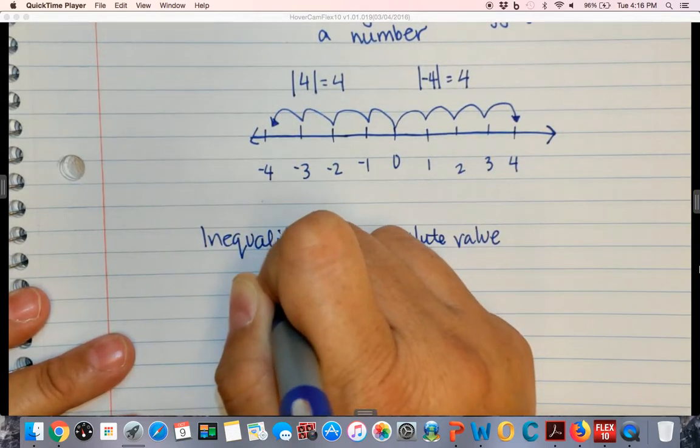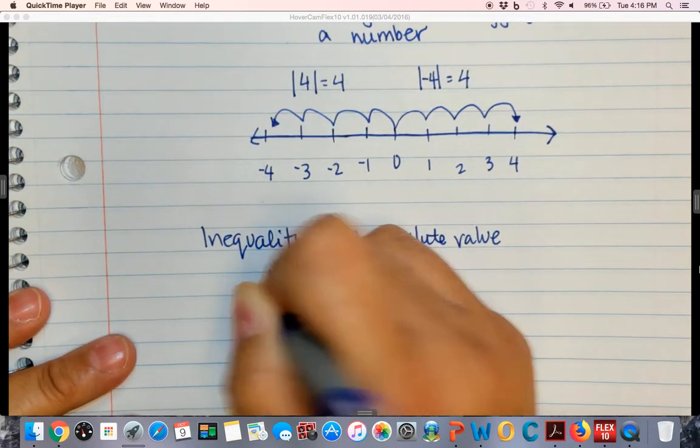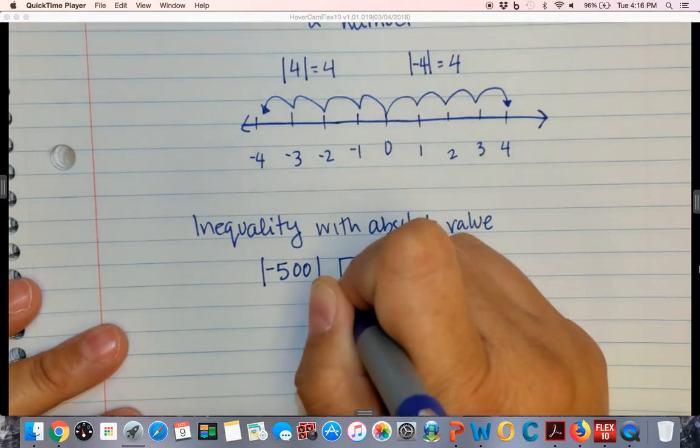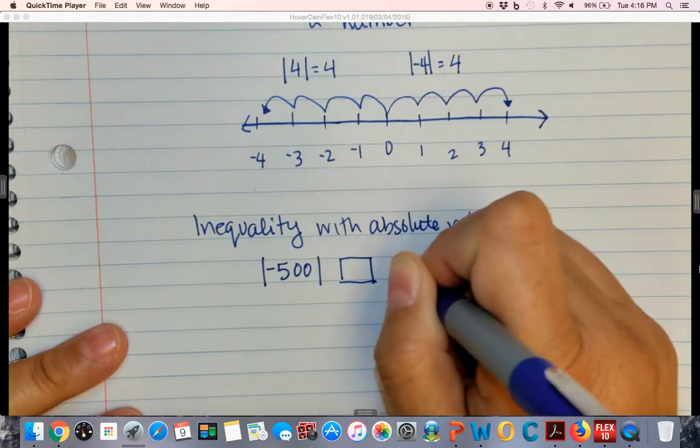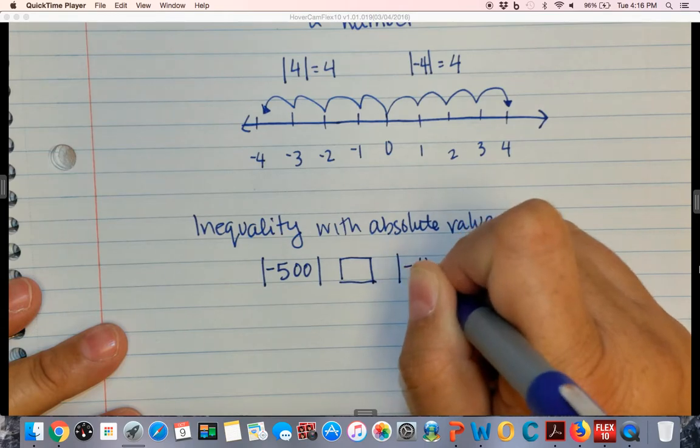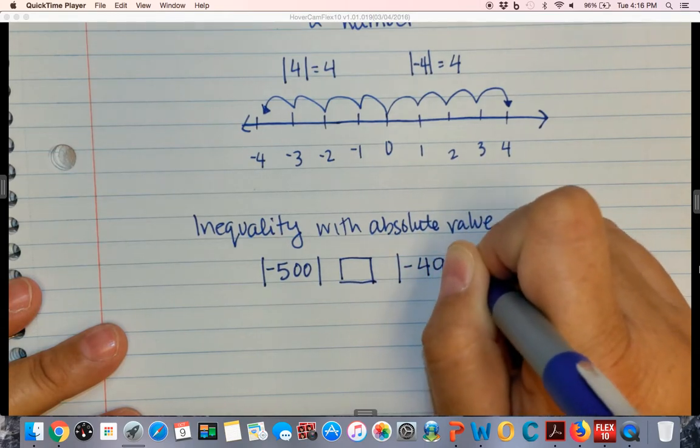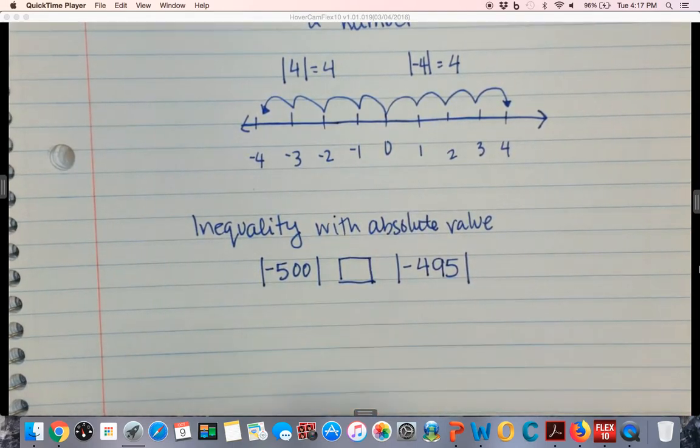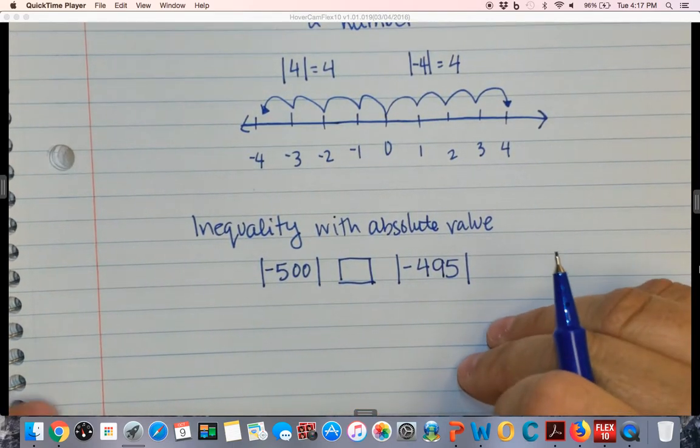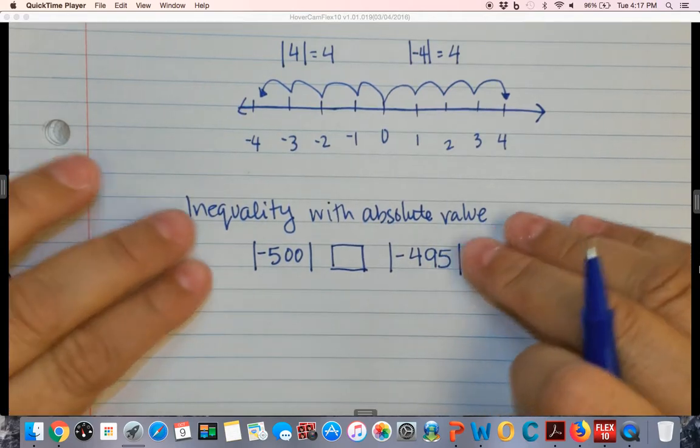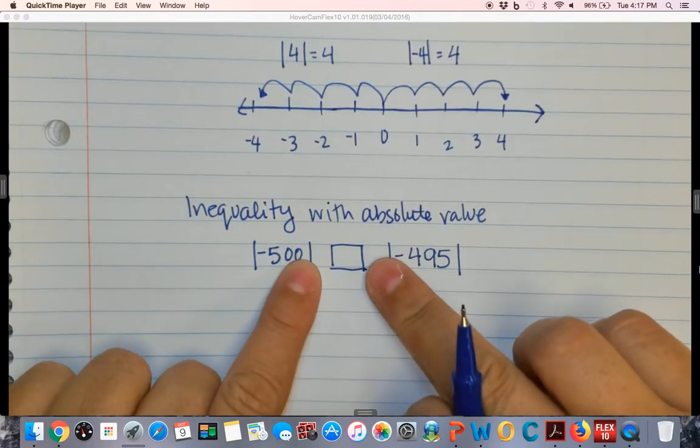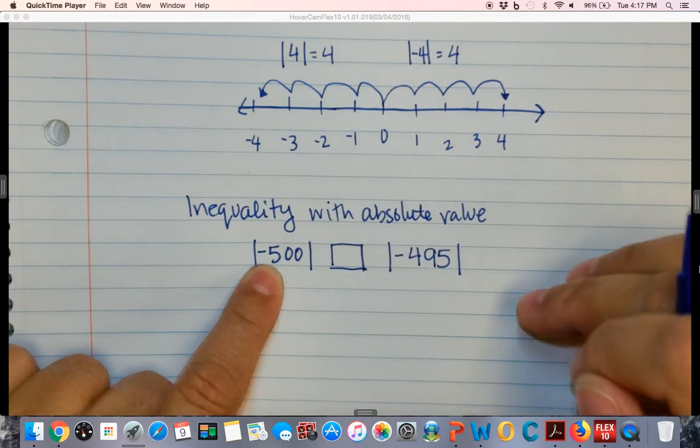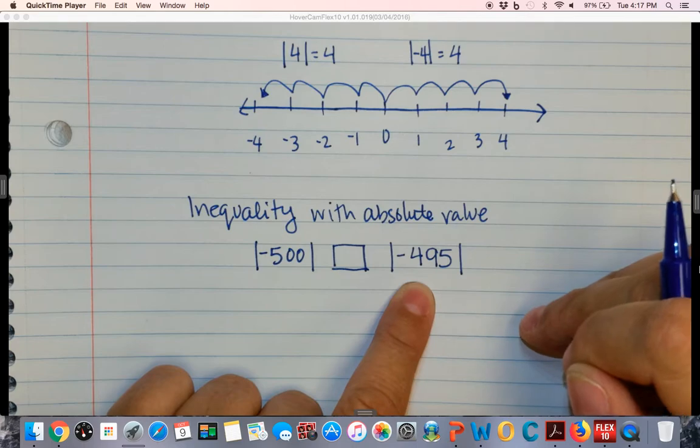So I'm going to say negative 500 and then I'm going to give you a little box here and negative 495. So the inequality with an absolute value changes. Normally if we did not have these lines hugging we would say that negative 500 is less than negative 495. Negative 495 has a greater value.